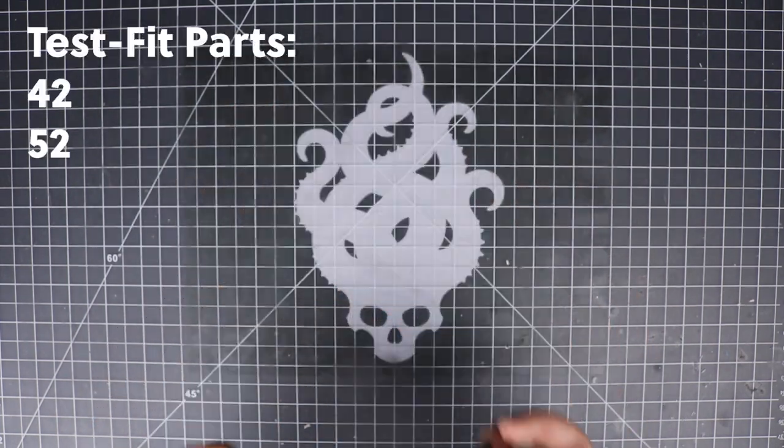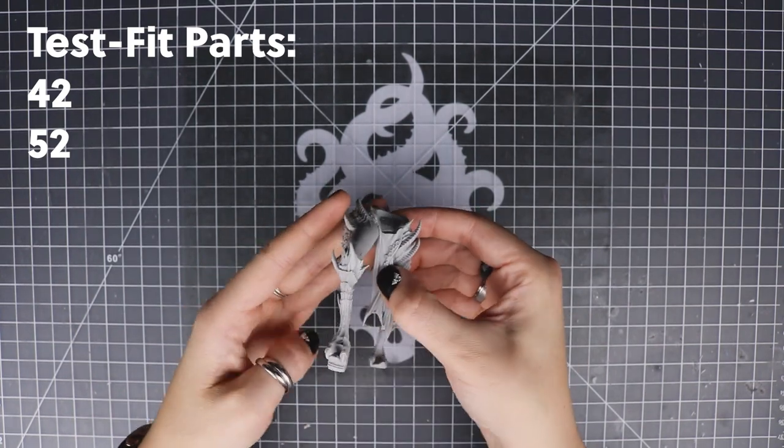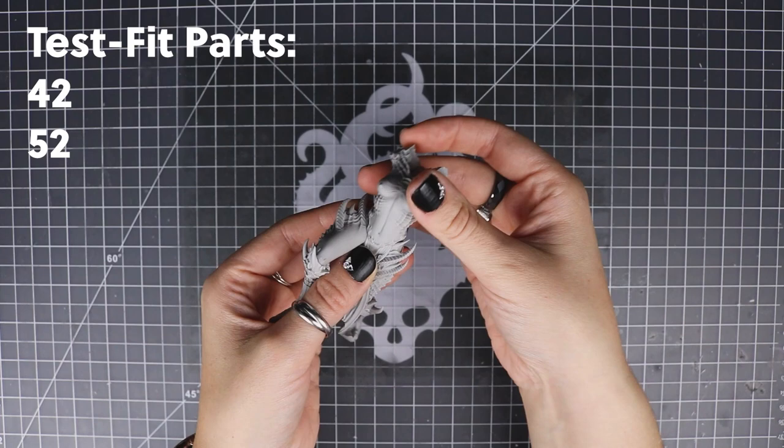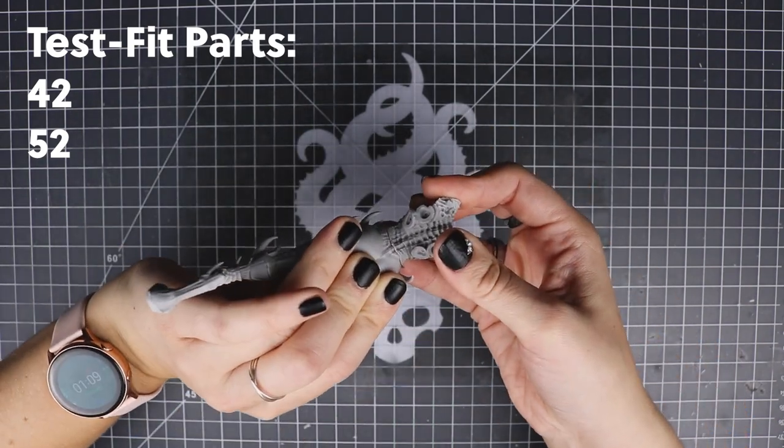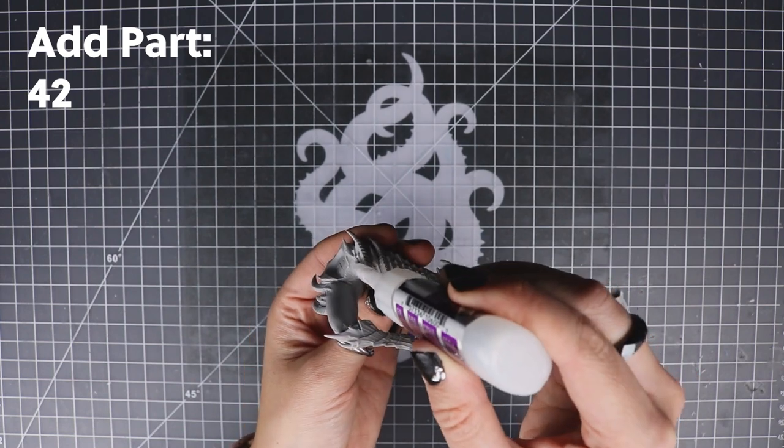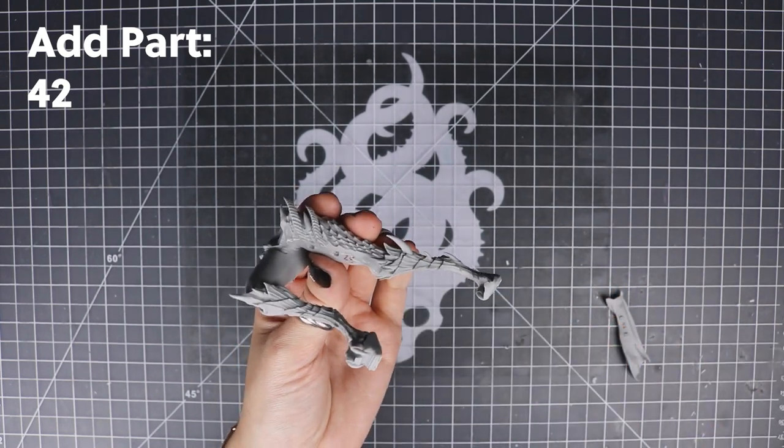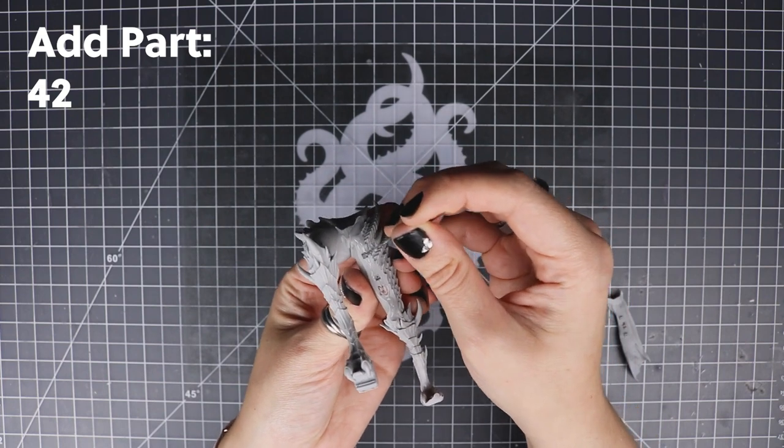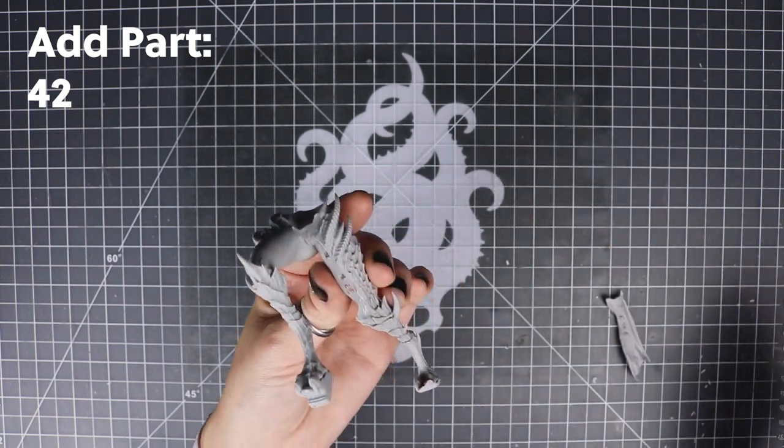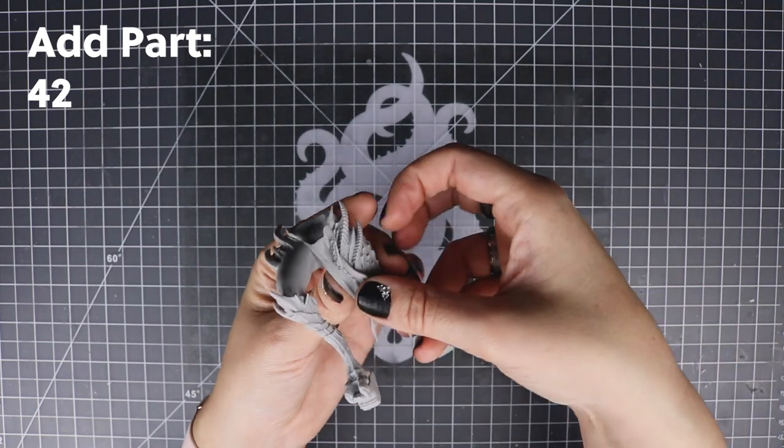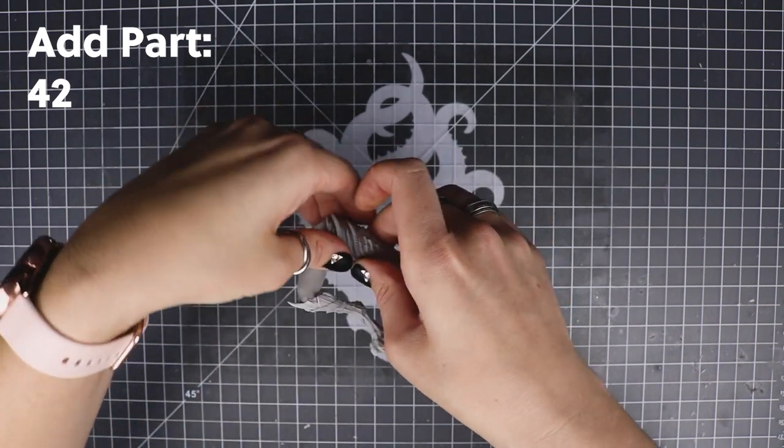Before we put those in the base, we're going to add her loincloth here. We also need to test the fit of the torso at this point to make sure that everything's fitting nicely. But at this point, we're just attaching the loincloth. You do have to kind of slot it in behind her right leg, so make sure that you get that correct angle so it's not sticking out. Clicks into place. Nice.